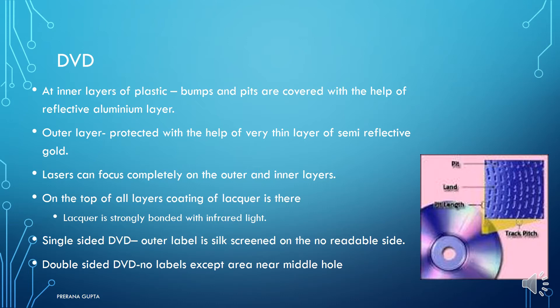In DVD, the inner layers of plastic contain the bumps and pits, which are covered with a reflective aluminum layer. The outer layers are protected with a very thin layer of semi-reflective gold. The lasers are made to focus completely on the outer and inner layers. On top of all these layers, a coating of lacquer is applied, bonded with the help of infrared light.